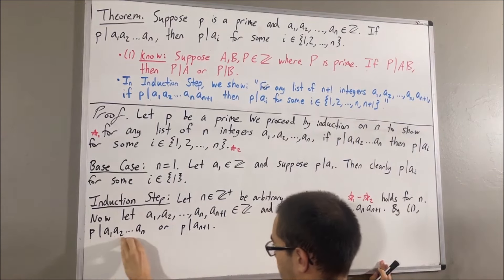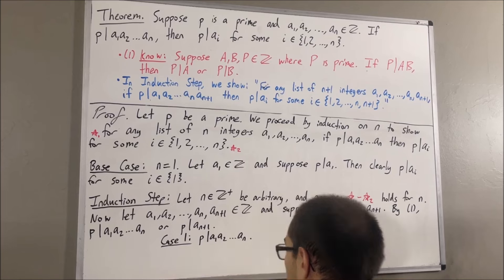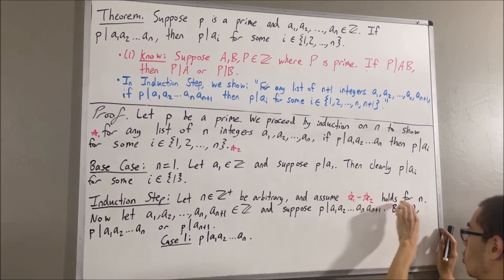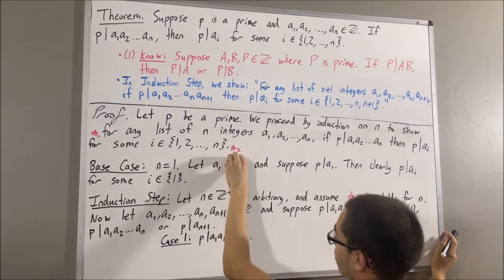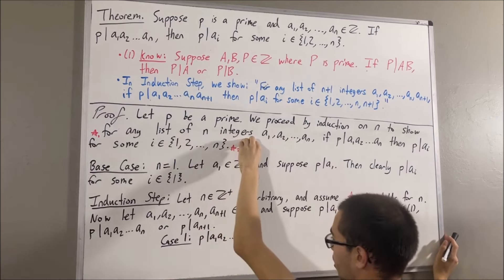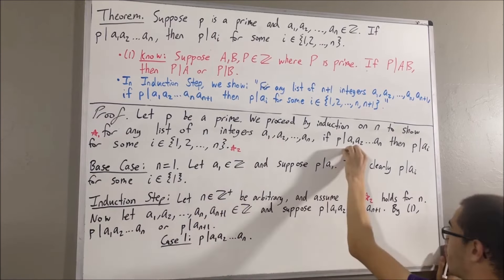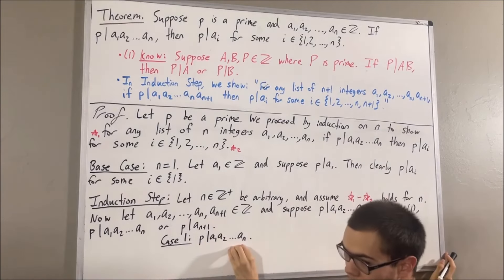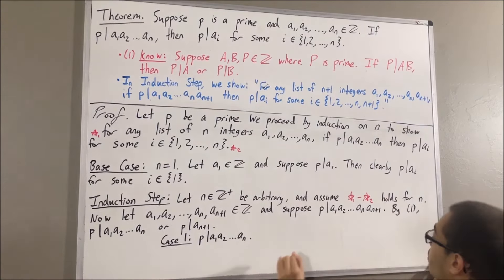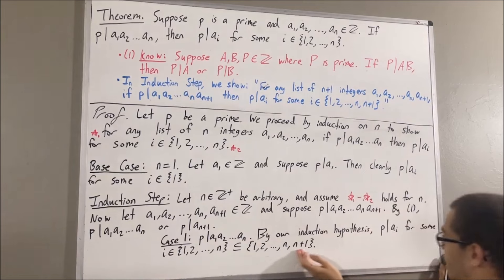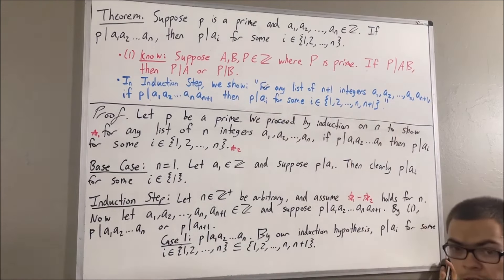So let's start with the case that p divides the product of the first n terms. Well, if this is true, then we can apply the fact that star 1 to star 2 holds for n. This means we know that this statement works for any list of n integers, so in particular it must work for the list a1, a2, ..., an. So we know if this is true, then this is true. Well, we know that p divides a1 times ... times an — that's exactly what we have here. Therefore, we know that p divides ai for some integer i between 1 and n. And this set is a subset of the integers between 1 and n plus 1. So this shows that p divides ai for some integer i between 1 and n plus 1, which is exactly what we wanted to show. So that completes the case.